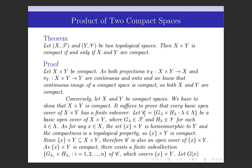Let C = { G_λ × H_λ : λ ∈ Λ } be a basic open cover of X cross Y, where G_λ ∈ T and H_λ ∈ V for each λ in Λ. Since G_λ ∈ T and H_λ ∈ V, each member of C is a basic open set, and so C is a collection of basic open sets which covers X cross Y; hence C is a basic open cover of X cross Y.